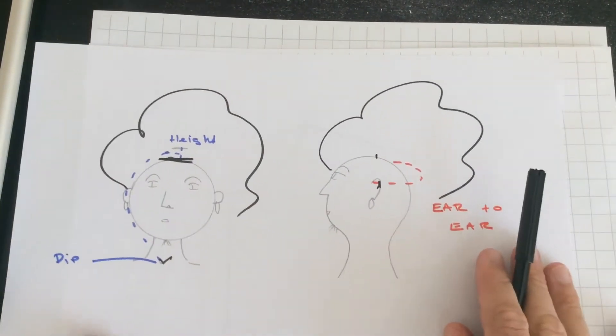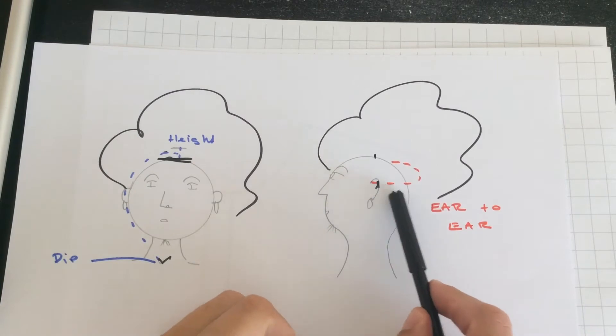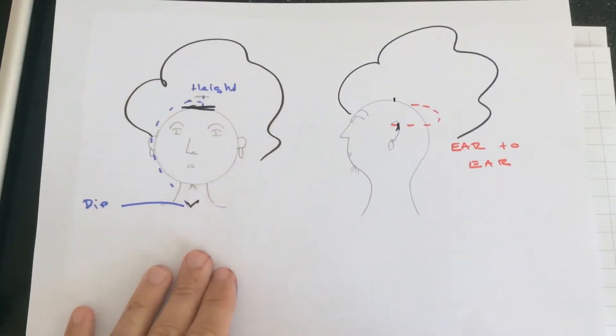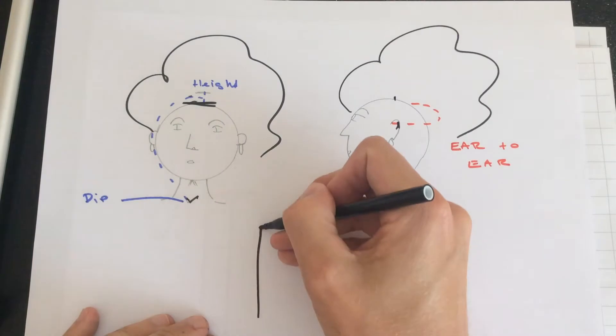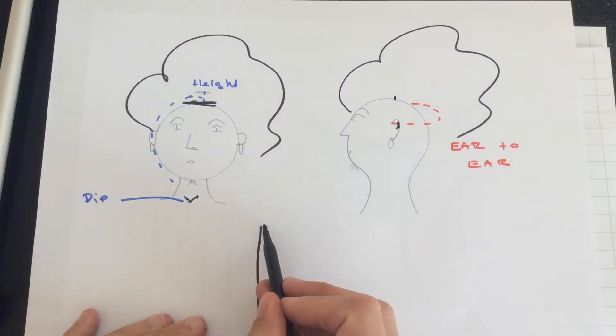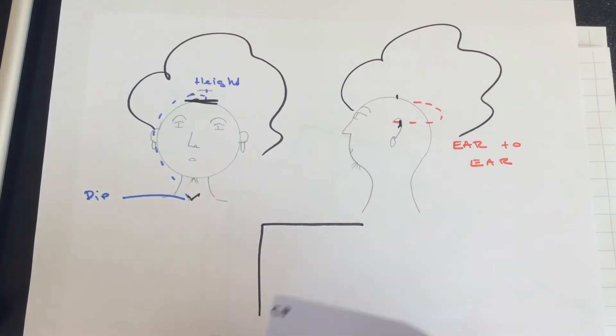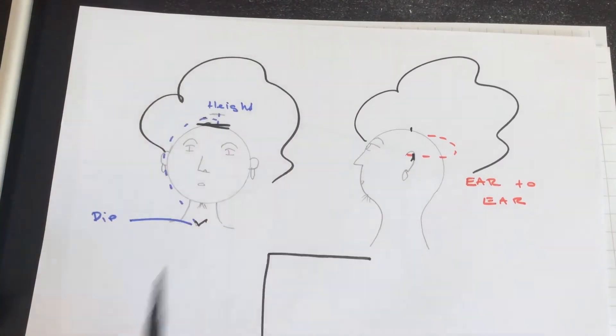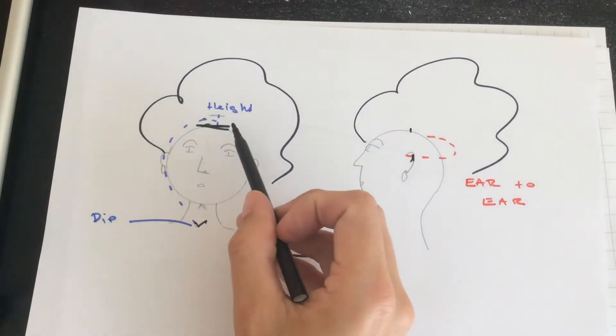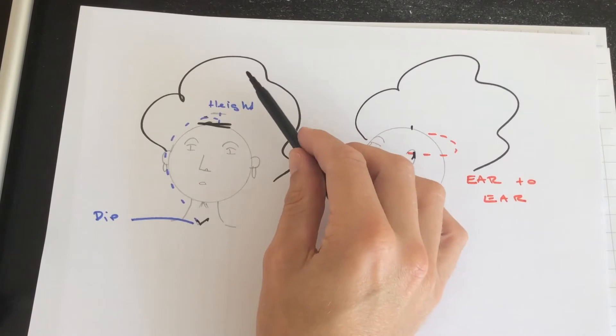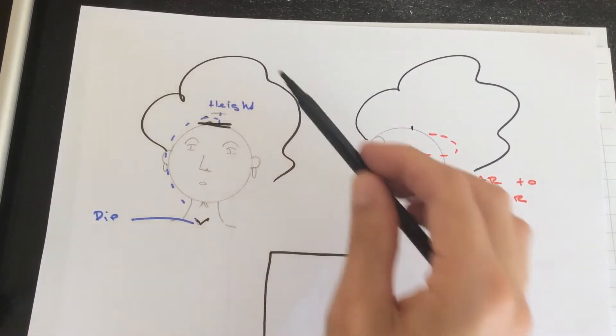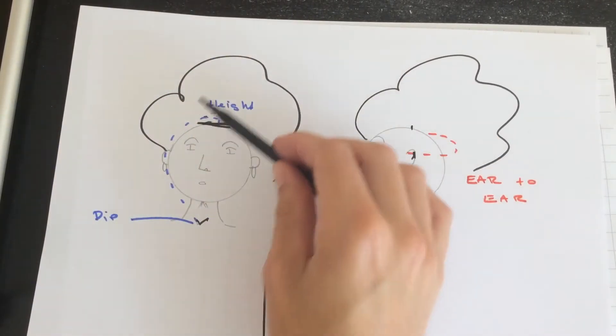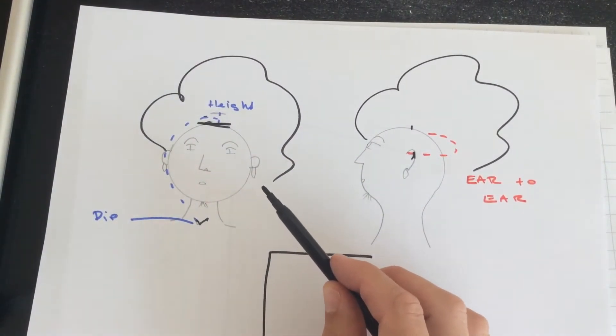And then the second measurement that we need is from ear to ear as well. So basically we are getting two measurements: the height and then the depth of the hood. This person here has a very big hairdo and you just need to be aware of that when taking measurements. If somebody's got a very big bouffant hair, you're probably going to get a higher measurement than somebody who is bald.